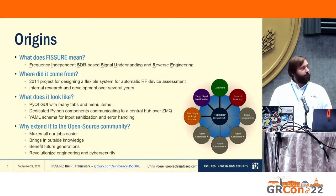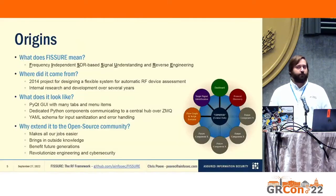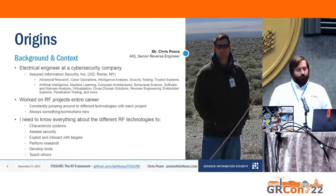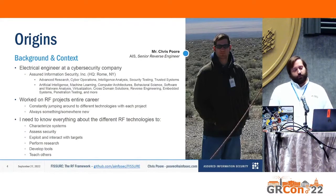What does it look like? It's a PyQT GUI with several dedicated Python components communicating to each other over a network. It uses ZMQ and talks to a central hub which passes information along. There's a nice YAML schema for input sanitization and error handling. So if you have a new component with clear inputs and outputs, you can make a simple Python wrapper and a YAML file and instantly add it to the framework with very little work.